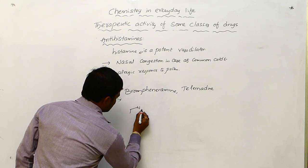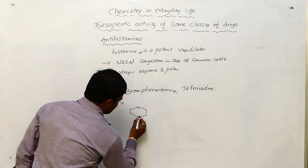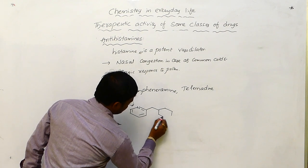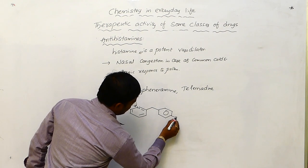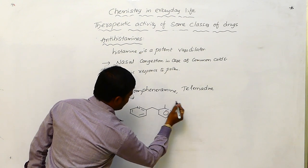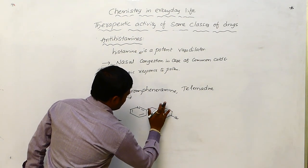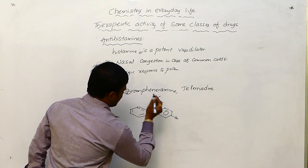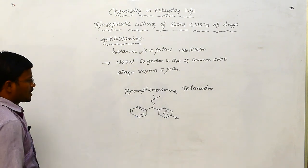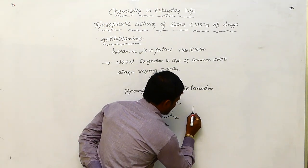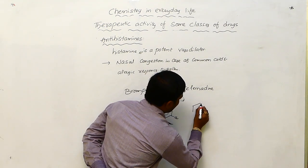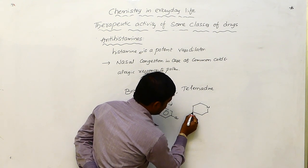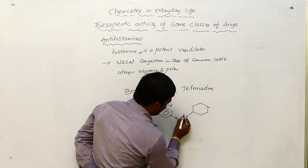Let us have the structure of these drugs. The structure of brompheniramine includes N-methyl and methyl groups. Whereas the structure of terfenadine, which also works as anti-histamine or which also has anti-histamine properties, will be represented as follows.